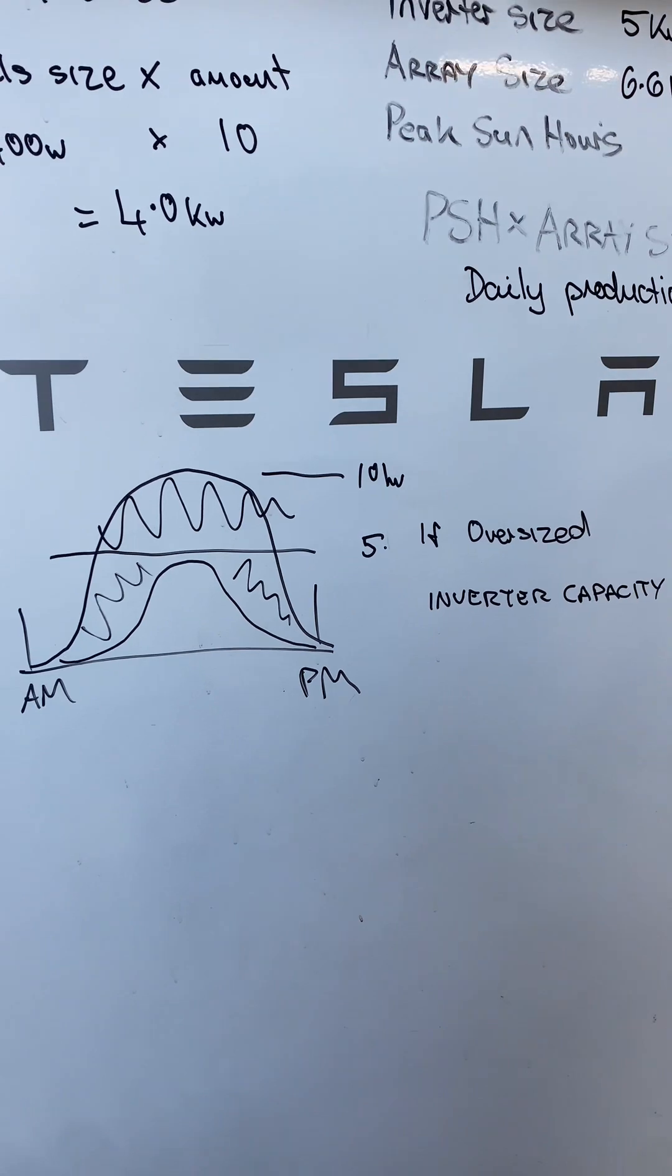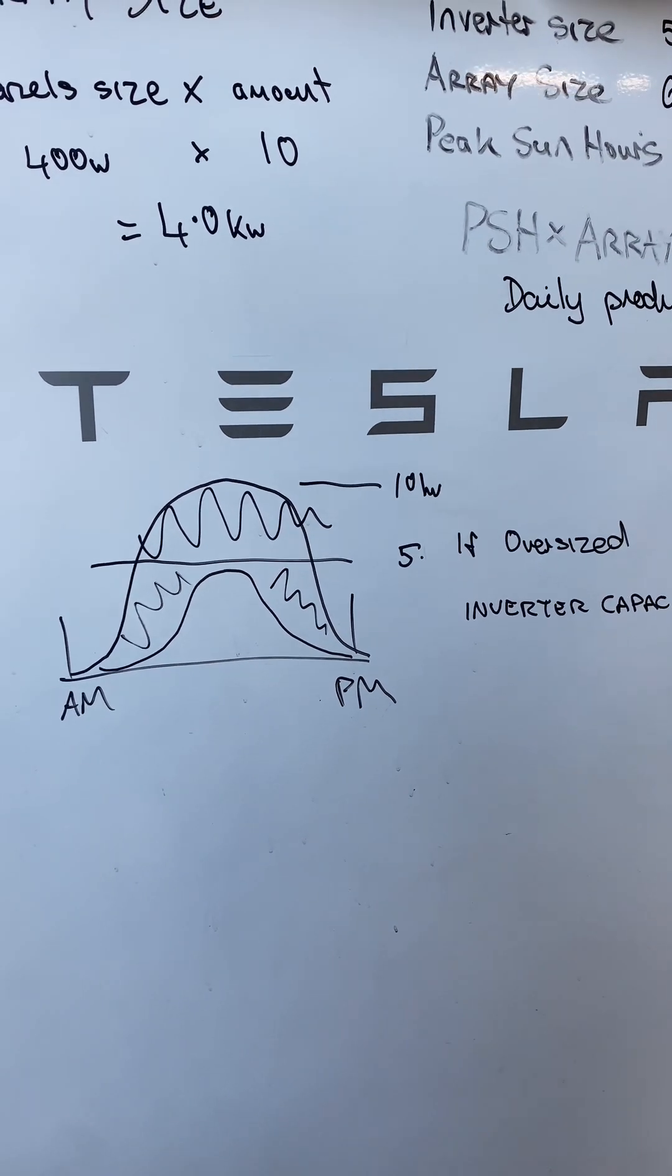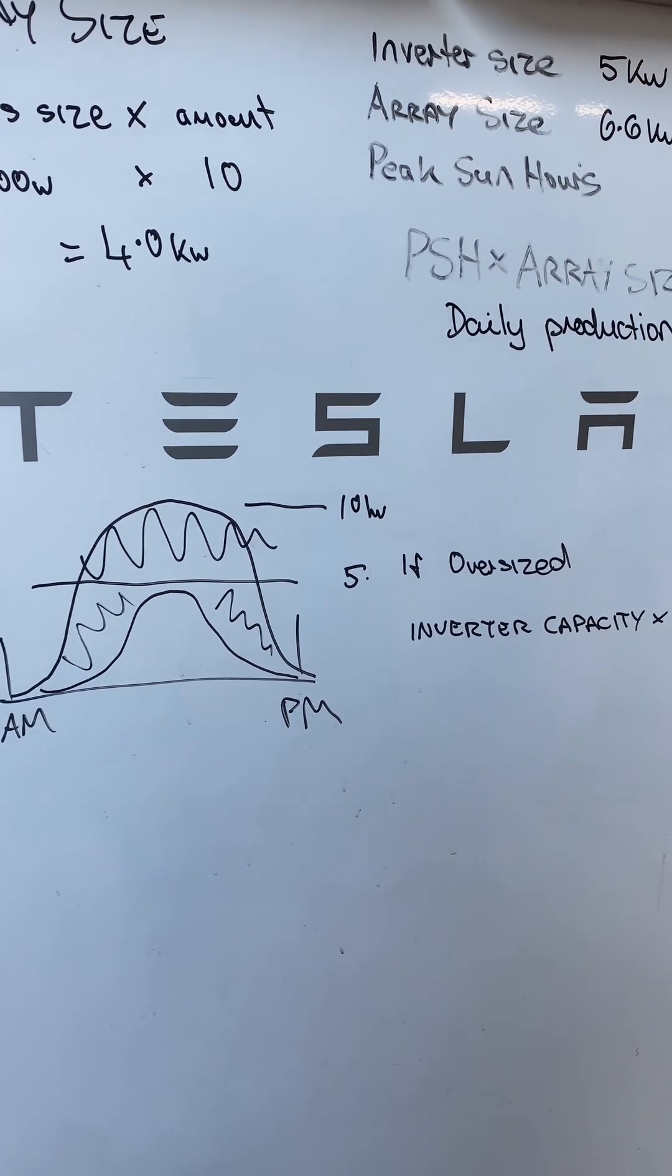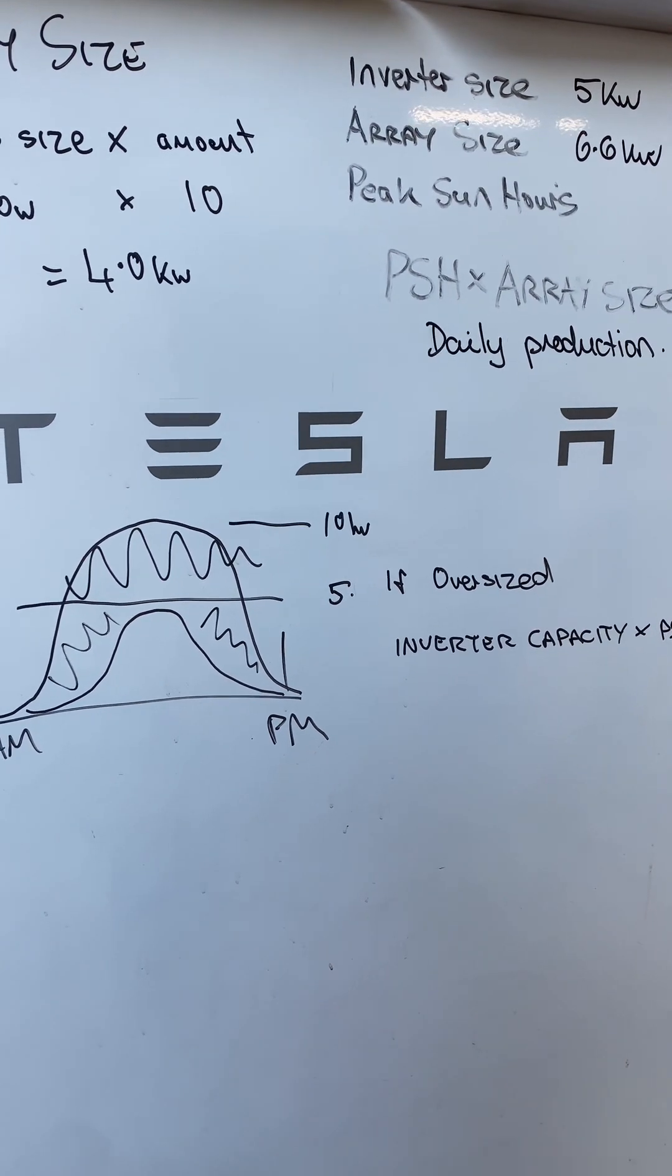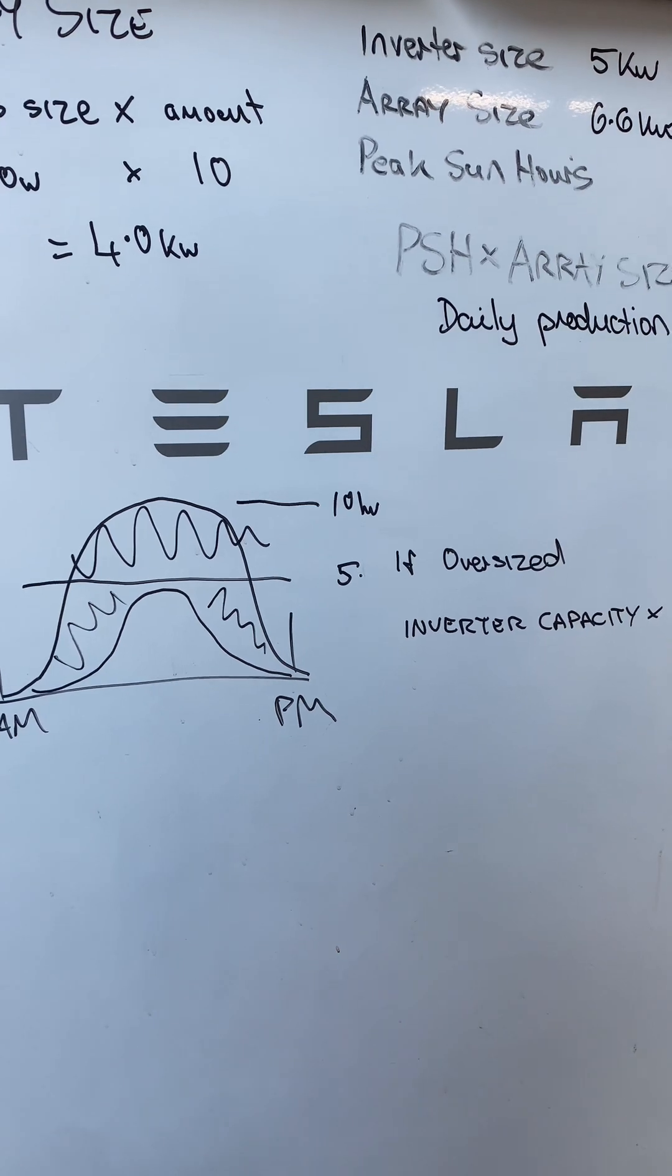But you want to be using what power you can during the day to get the maximum financial benefits from your solar system. So try and use whatever power you can during the day. Set timers on appliances that you can set timers on, such as pool pumps, spas, that sort of thing, dishwashers, dryers, and then try and conserve your energy at night. That way you're going to get the most out of it.